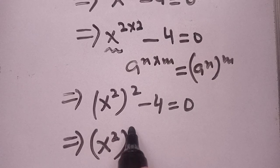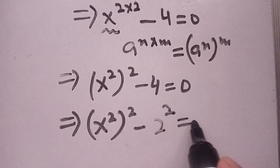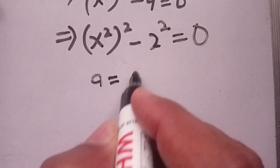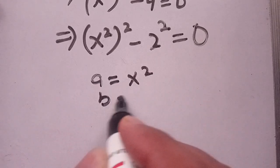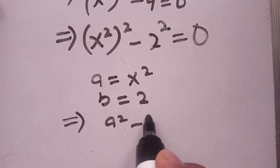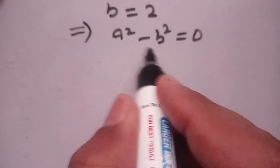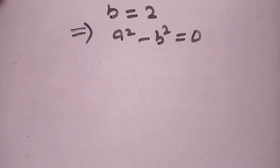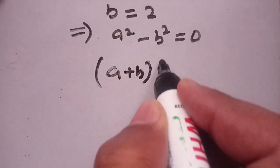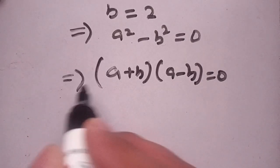In the next step, we can write x power 2, bracket power 2, minus 4 as 2 power 2, all equal to 0. Now consider a is equal to x squared and b is equal to 2. It becomes a squared minus b squared is equal to 0. From the identity, we know that a squared minus b squared is equal to a plus b times a minus b.